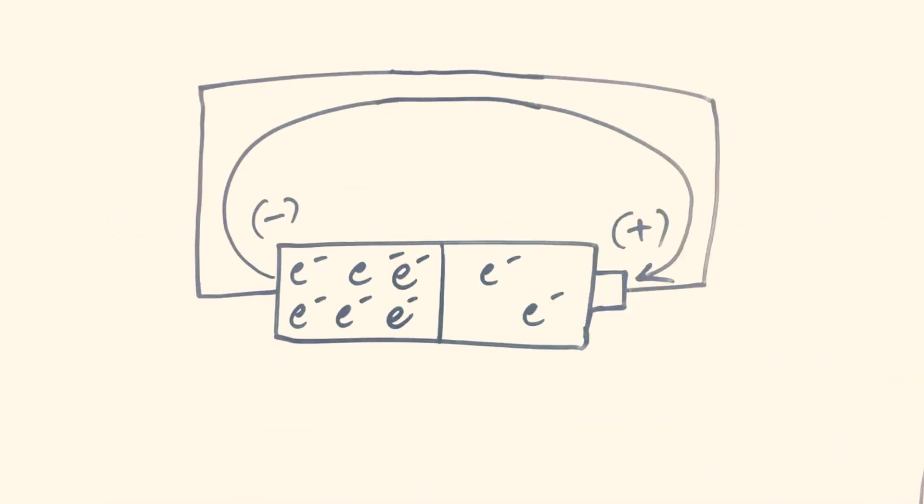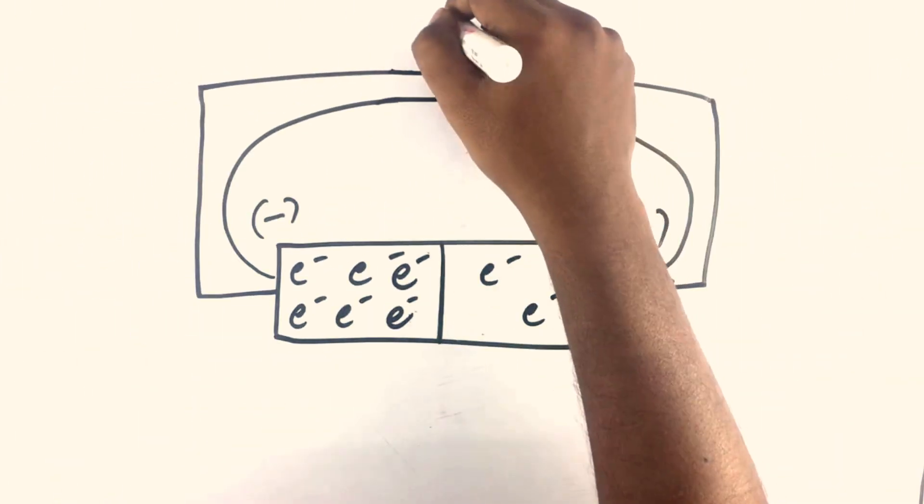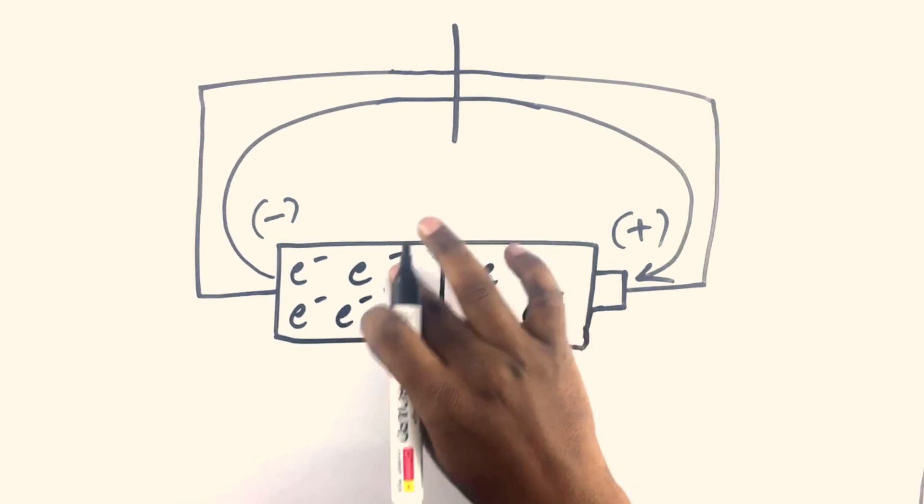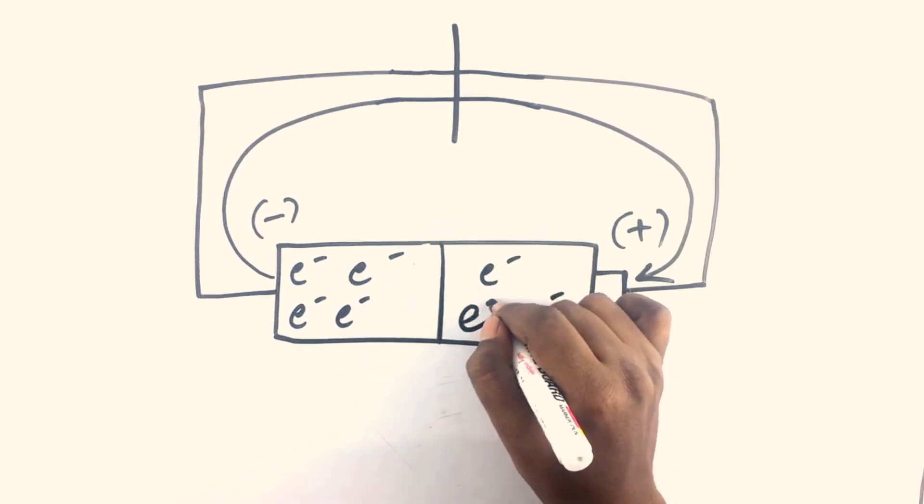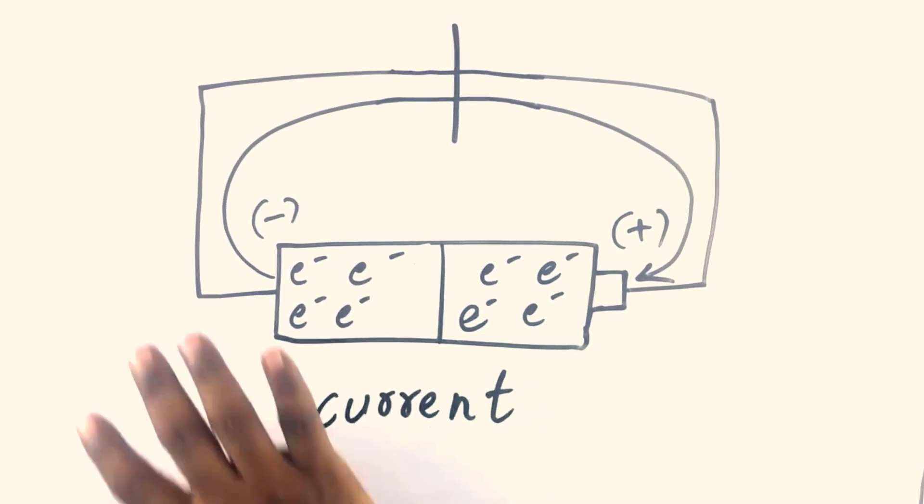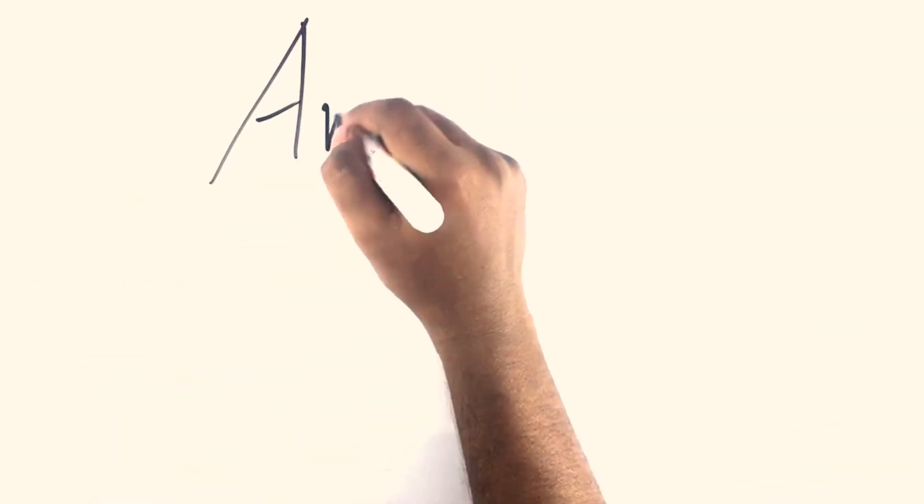The amount of negative charge passing through one cross section of the wire in a second can be seen as current. This is measured in amperes.